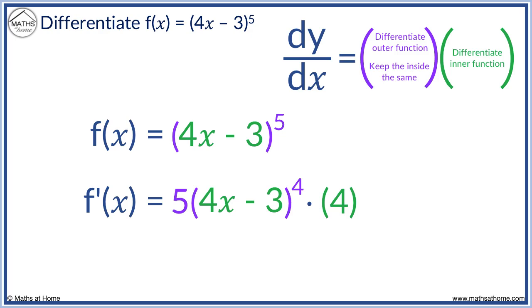We have now fully differentiated the function. We just simplify it by multiplying 5 by 4. f'(x) equals 20(4x - 3)^4.